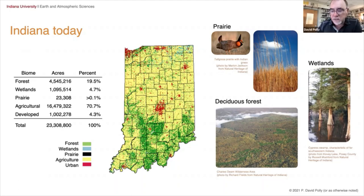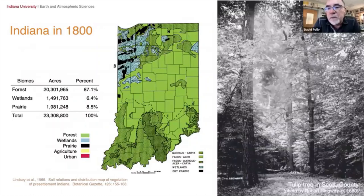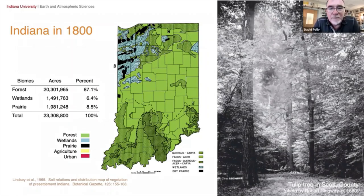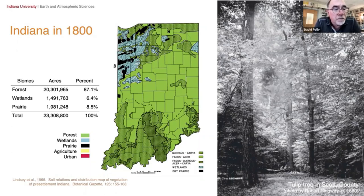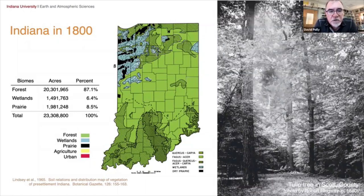But if you step back to 1800, before Indiana was settled by Europeans, the map looked completely different in the same color scheme. At that point, forest covered 87% of the state of Indiana. Wetlands covered another large percentage, and prairie as well. Some of the wetlands were open, but much of them were also forested in a swamp-like environment. Here on the right you see trees from the late 1800s — a tulip tree in Scott County, Indiana — with three individuals sitting at its base.